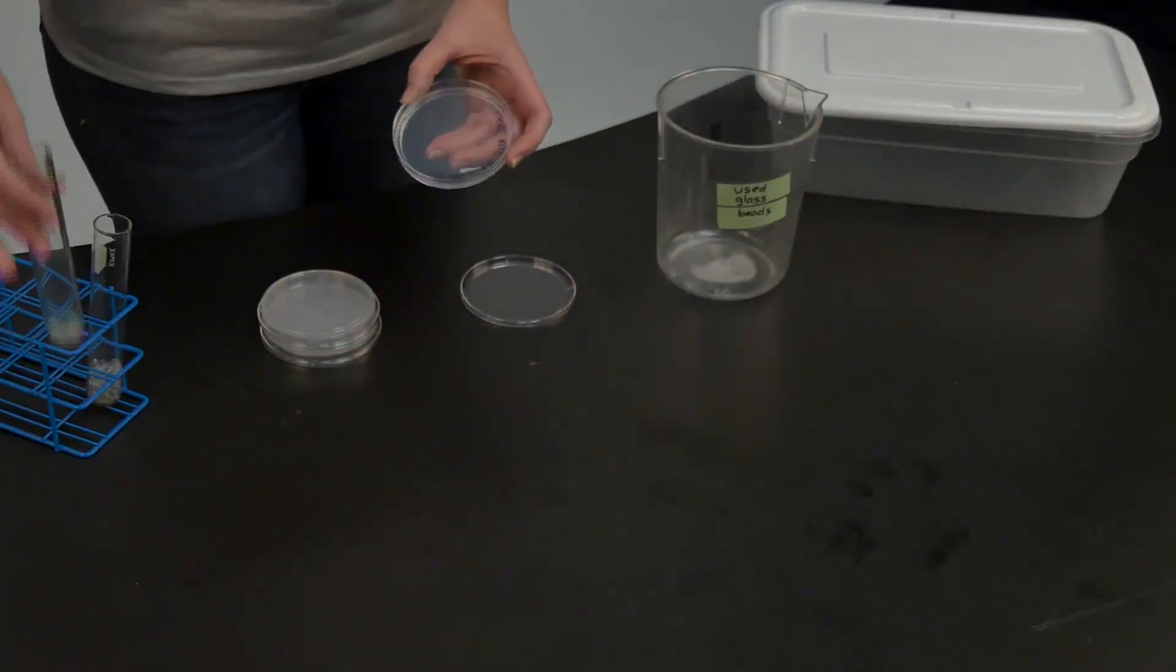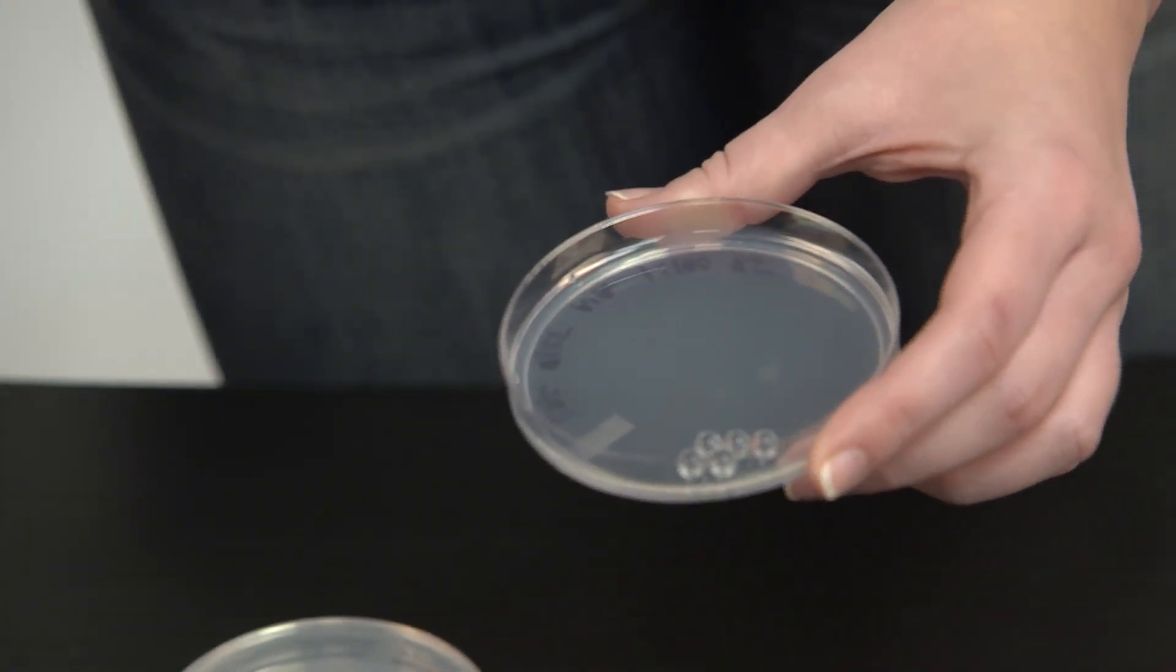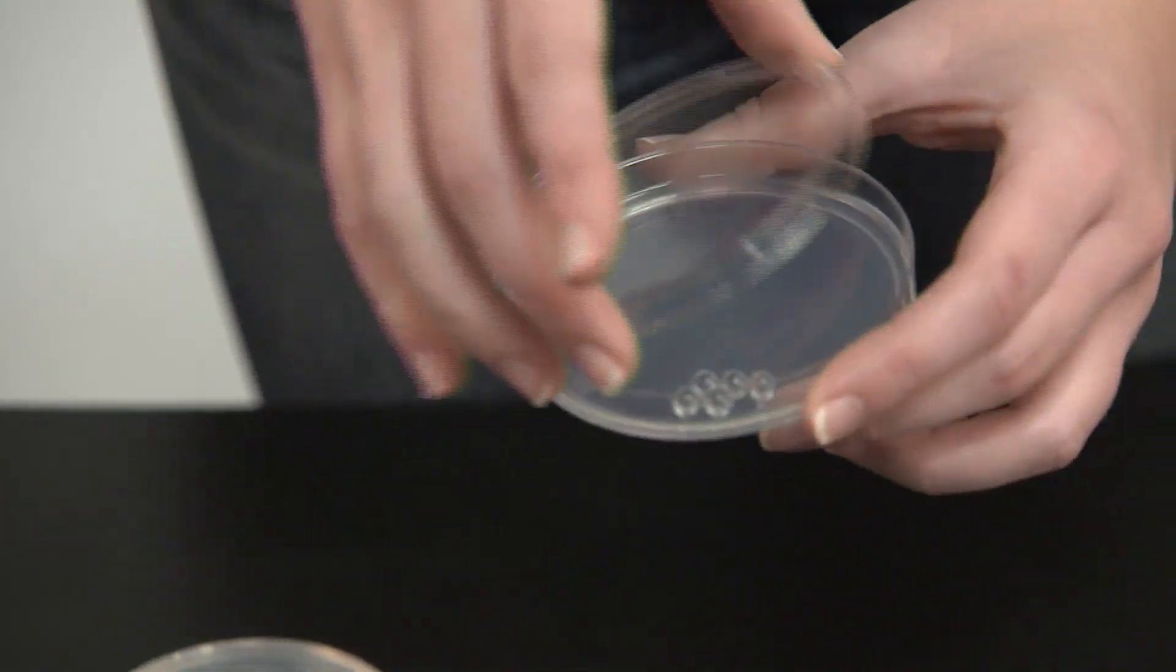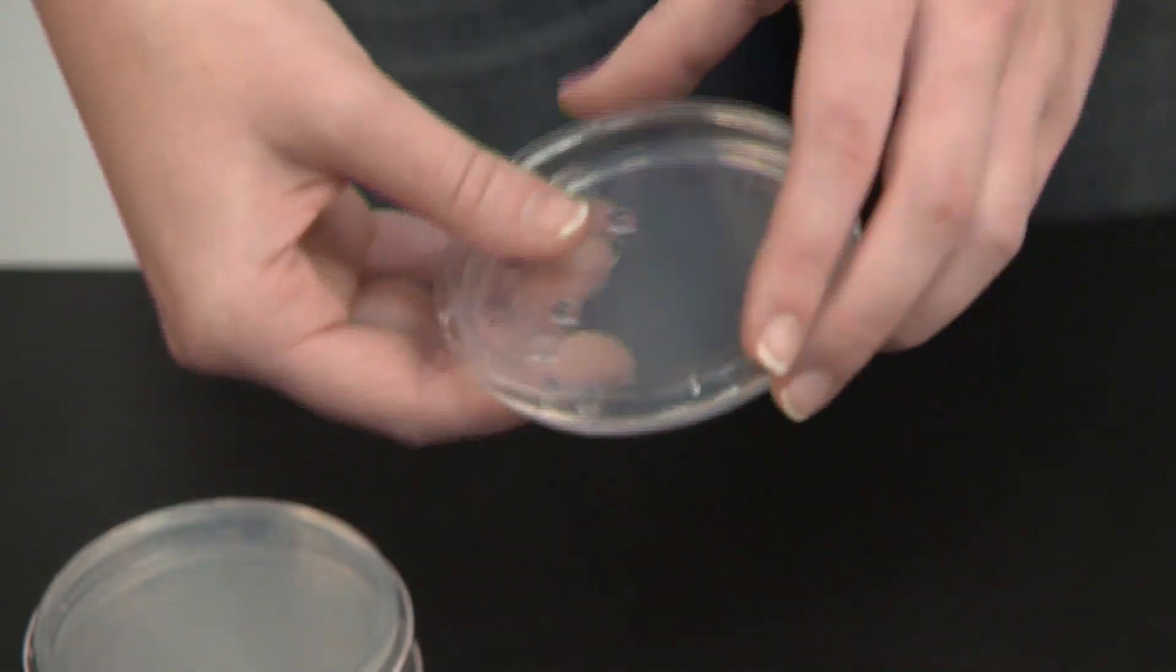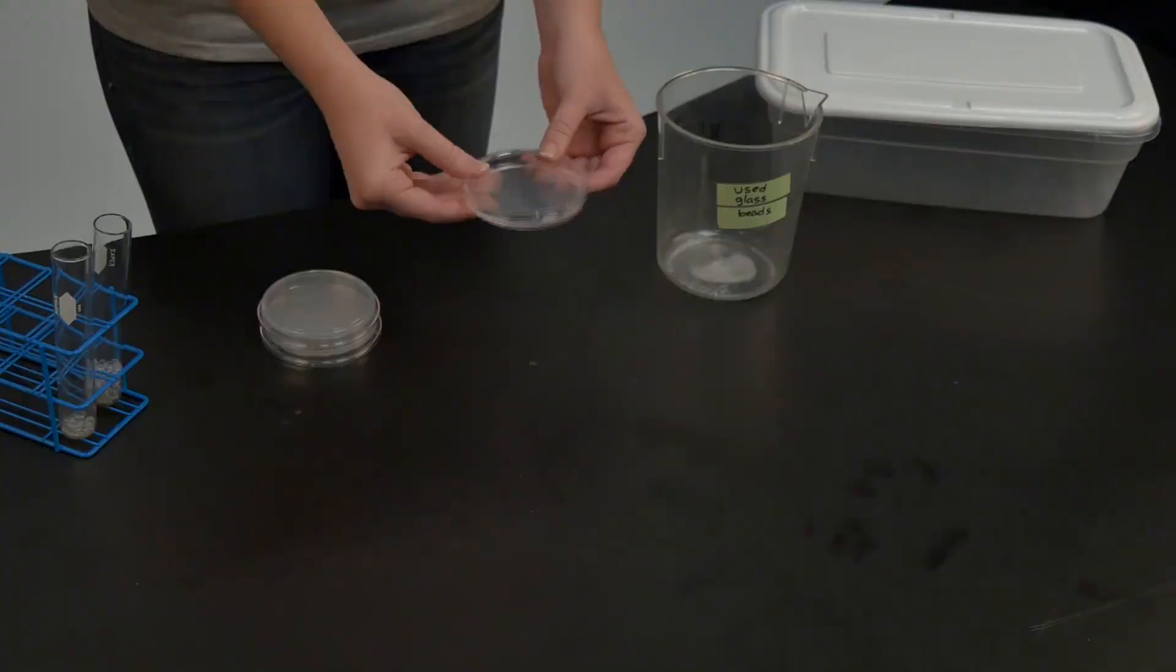Use 5 to 10 sterile glass beads to spread your sample on the agar plate. Replace the lid and then swirl the plate so that the glass beads spread the bacteria to all parts of the petri dish. Pour the glass beads into a container so that they can be sterilized and then used again.